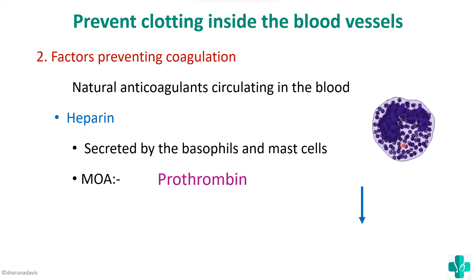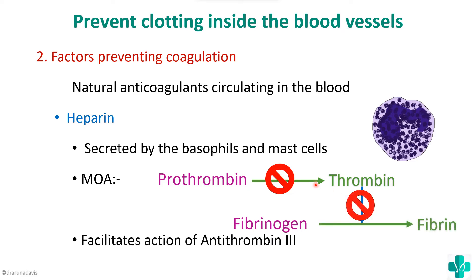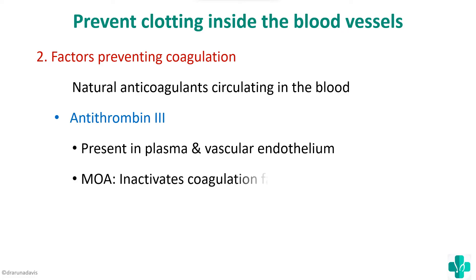The mechanism of action of heparin: in the clotting mechanism, prothrombin is converted to thrombin — this conversion is inhibited by heparin. Not only that, thrombin converts fibrinogen to fibrin, and heparin inhibits that also, preventing fibrinogen from being converted to fibrin. Moreover, heparin facilitates the action of antithrombin-3.